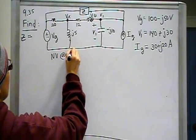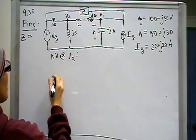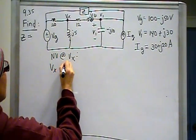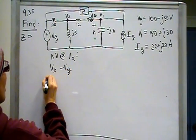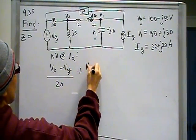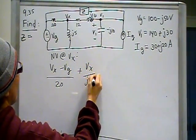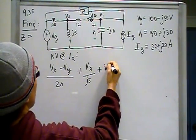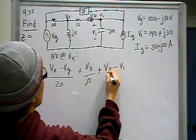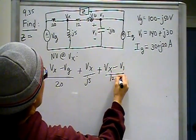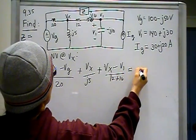I'm going to write my first node equation at Vx and see where it takes me. Node voltage at V sub x. My equation here will be Vx minus Vg over 20, plus Vx over j5, plus Vx minus V1 over 12 plus j16. And that all better equals zero.